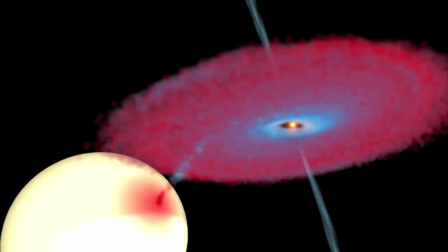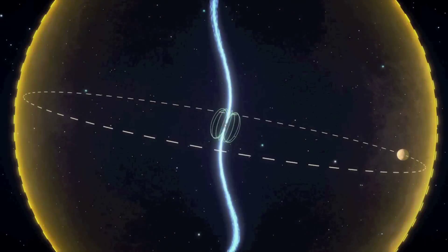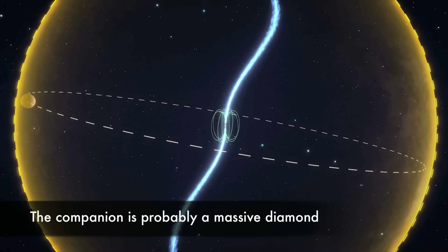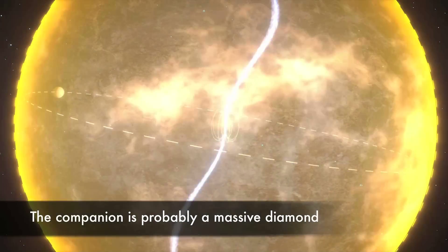The evolutionary history and amazing density of the planet all suggest it is comprised of carbon, i.e. a massive diamond orbiting a neutron star every two hours in an orbit so tight it would fit inside our own sun.